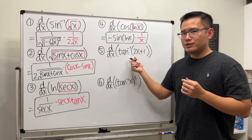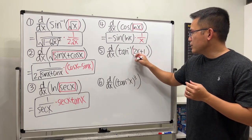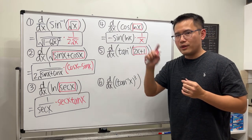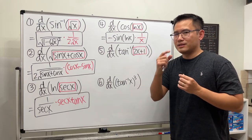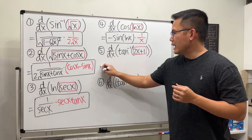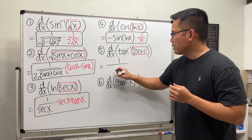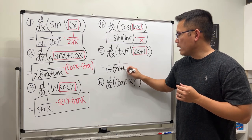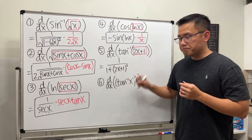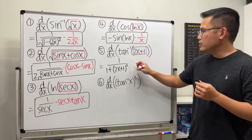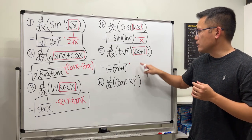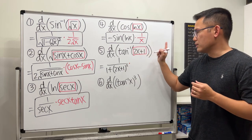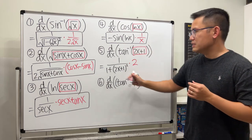Number five: inverse tangent. We have inverse tangent of a box, so the derivative of inverse tangent is 1 over 1 plus the box squared. We have 1 over 1 plus the box — which is 2x plus 1 — and we square that. Then use the chain rule, multiplying by the derivative of the box. The derivative of 2x plus 1 is just 2, so that's it.